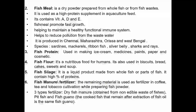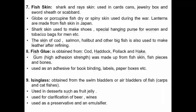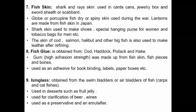Fish guano is the cooked fish that remains after extraction of fish oil. Fish skin: Sharks and rays skin is used in crafts, canes, jewelry boxes, sword sheaths and skateboards. Globefish or porcupine fish dry spiny skin is used during wartime. Lanterns are made from fish skin in Japan. Shark skin is used to make shoes, special handbags for women and tobacco bags for men. The skin of cod, salmon, halibut and other large fish is also used to make leather after refining.